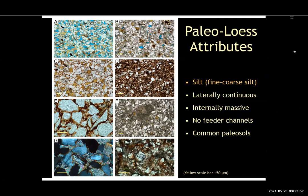The first attribute is grain size, which tends to be fine to coarse silt. You're seeing here several different thin section photomicrographs — not just loess but also siltstone — including dust that fell into the marine environment, such as the one with letter F that has a crinoid in the middle of it. But all of this is fine to coarse silt.